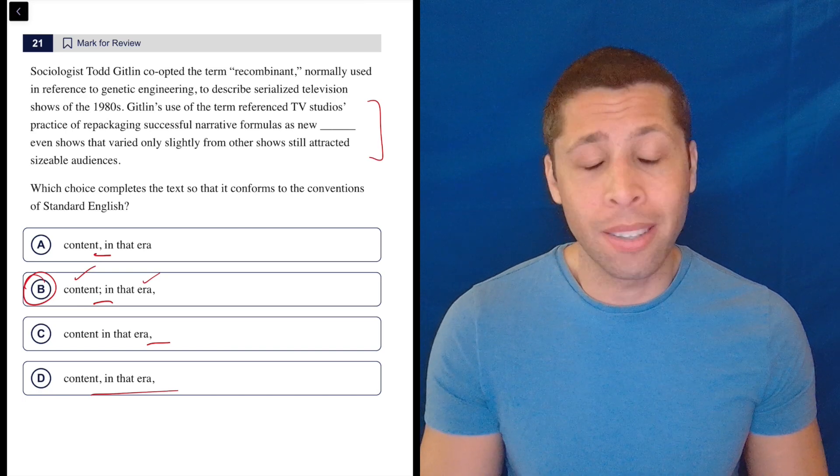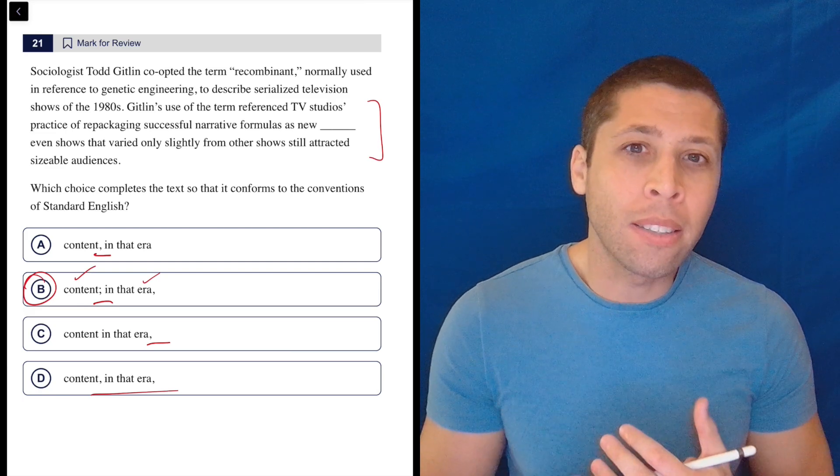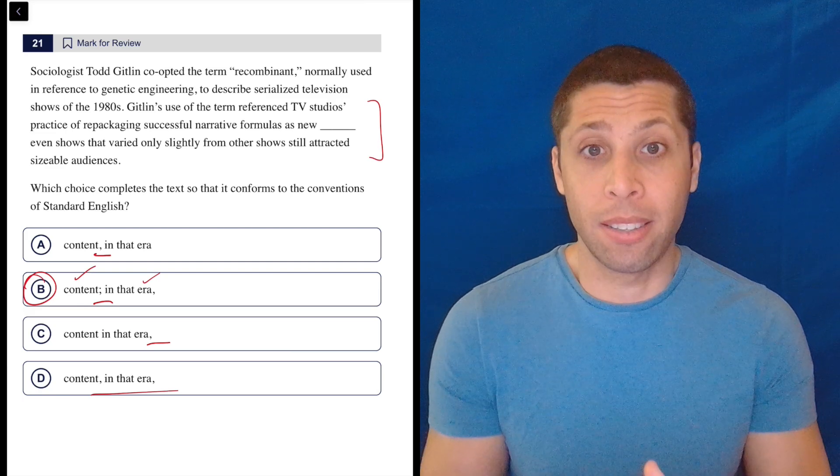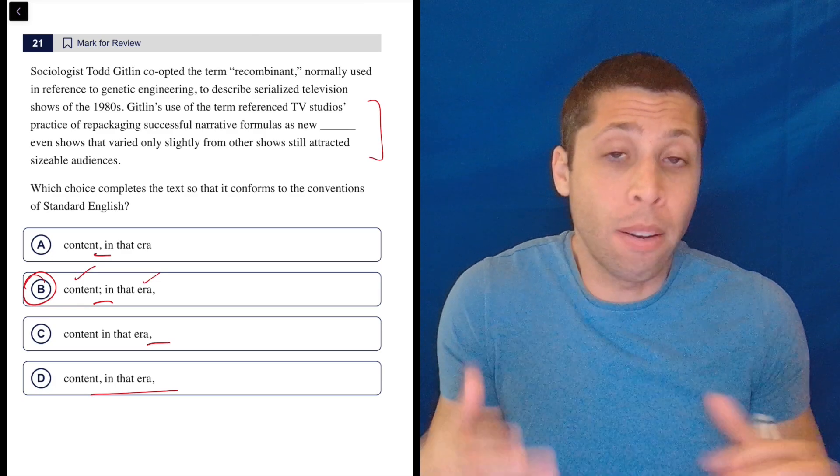And if you see a semicolon in a choice, it's our first thing that we should be thinking about because it has such an easy test. Do we have a sentence before? Do we have a sentence after? If not, then fine, we cross it out.